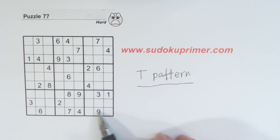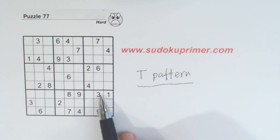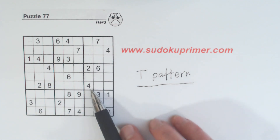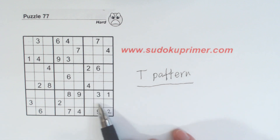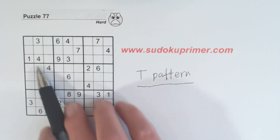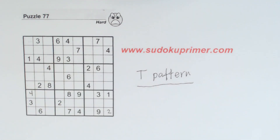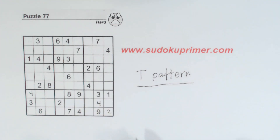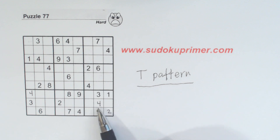Now let's look over here. We don't have a T pattern here yet, but we have a two here and a two here, so we know this cell right here is a two, and that forms a T pattern. You can see the T very clearly. With that T, we've got a three there already so that doesn't help us, but we've got a four here, so one of these is a four. With one of these being a four and this four over here, we know that's a four right there. And now this is a four also.